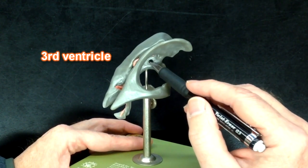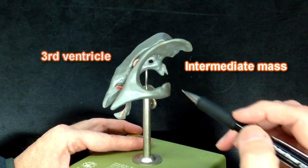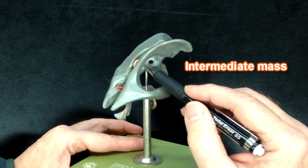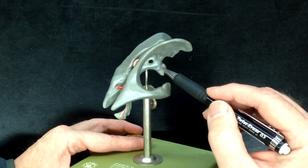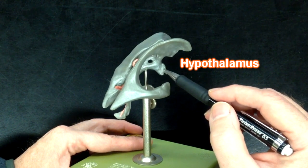This void right here, that's where the intermediate mass would be located. But this is third ventricle around here, and you can see how the plastic migrated into the hypothalamus down here.